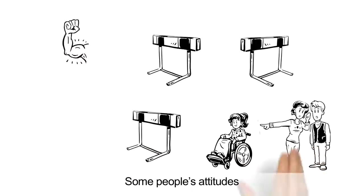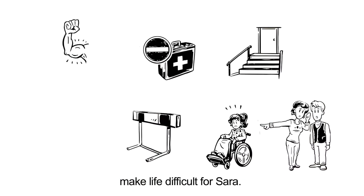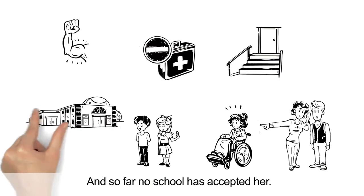Some people's attitudes as well as physical and economic barriers make life difficult for Sara. They say she can't be in a choir and so far, no school has accepted her.